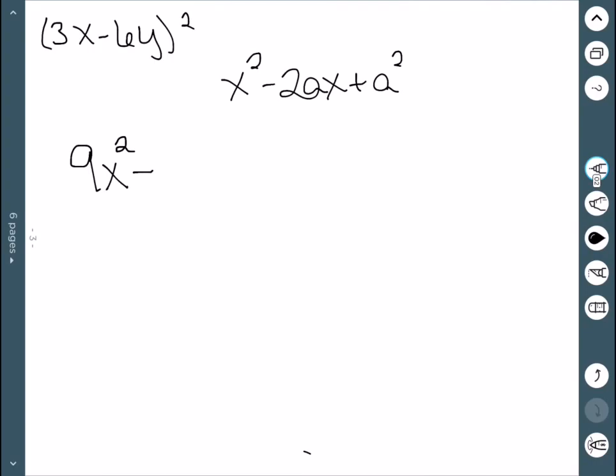And then multiply by 2. 18 times 2 is 36. And then finally, we square the last term. 6y squared would be 36y squared.